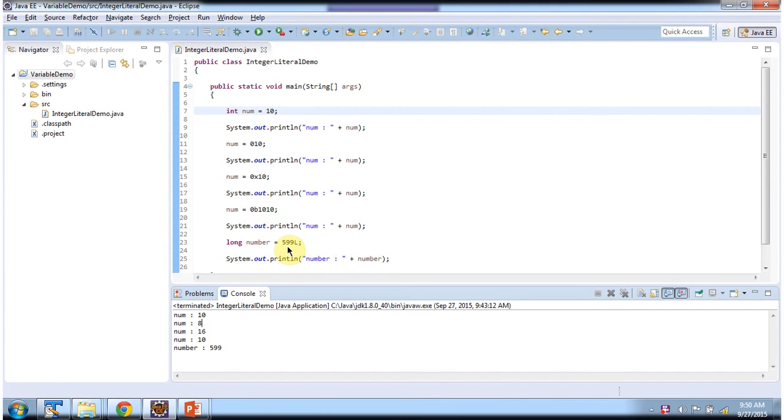Here I am assigning integer to num number, and 599 ends with L so it is type of long. And here you can see the output. This is about integer literals. Thanks for watching.